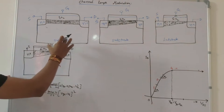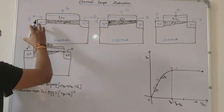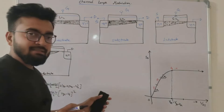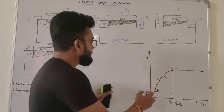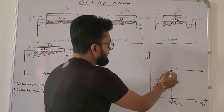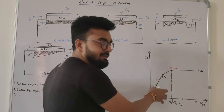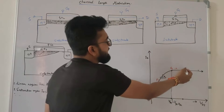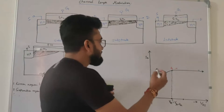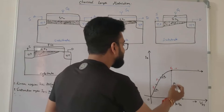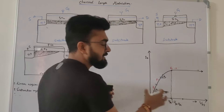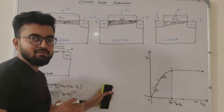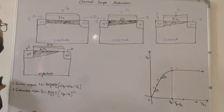Let's consider the n-channel enhancement type MOSFET which has drain, gate, source, and the substrate. We'll divide it into three regions: R1 and R2 which correspond to the linear region, and then the saturation region. The pinch-off point is R3. We'll analyze by varying VDS and see how increasing VDS impacts the current in the MOSFET.